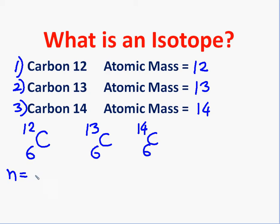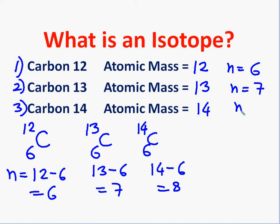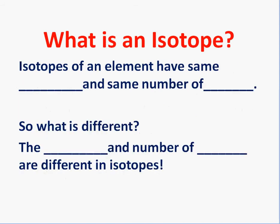We can find the number of neutrons if we know the atomic mass number and atomic number — it is simply subtraction of the two numbers. So the number of neutrons for carbon-12 is 12 minus 6, which equals 6. For carbon-13 it is 13 minus 6, which is 7. And for carbon-14 it is 14 minus 6, which is 8. So isotopes have different atomic masses and different numbers of neutrons.